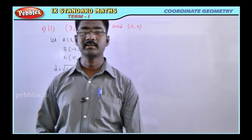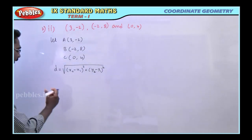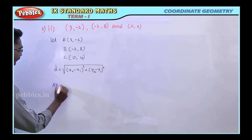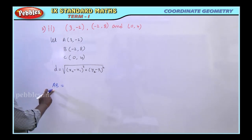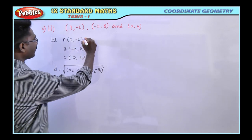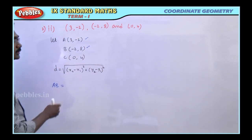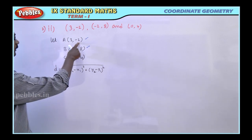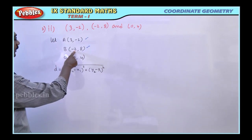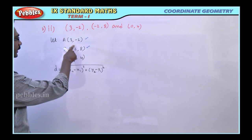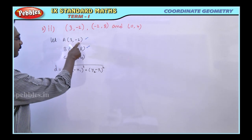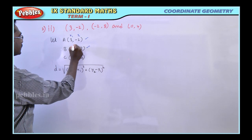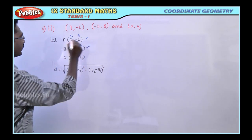So using the formula, first find the distance between A and B. For distance AB, point A is (X1, Y1) and point B is (X2, Y2). So X1 = 3, Y1 = -2, X2 = -2, Y2 = -8.